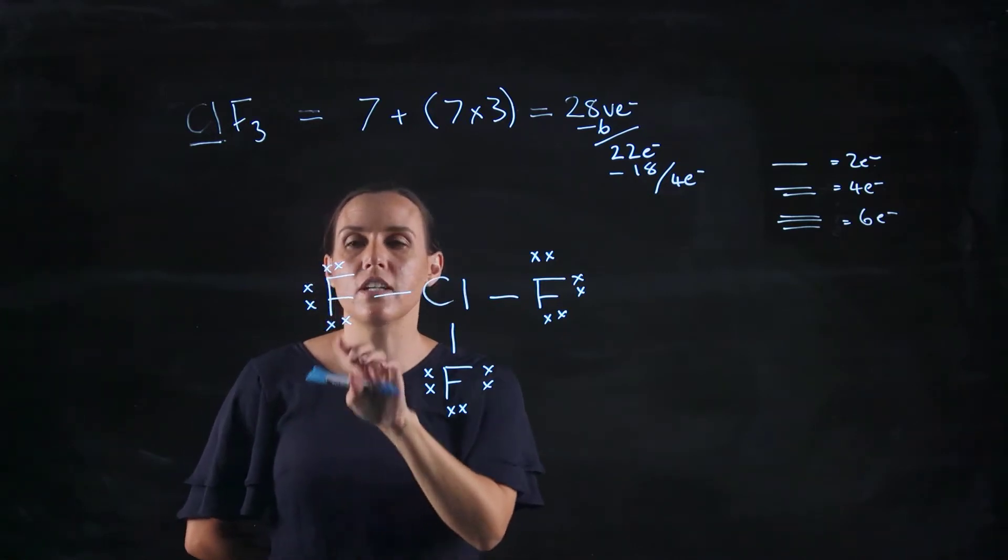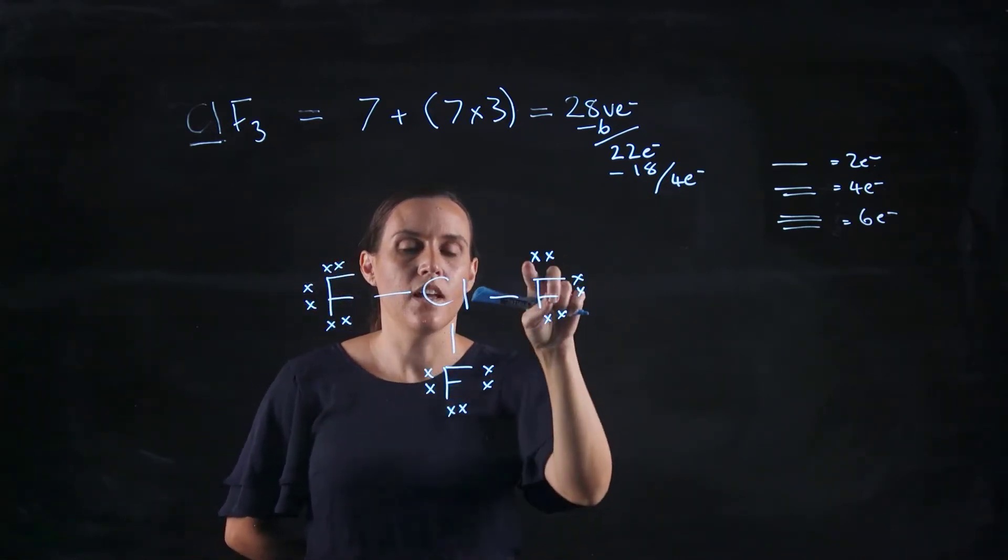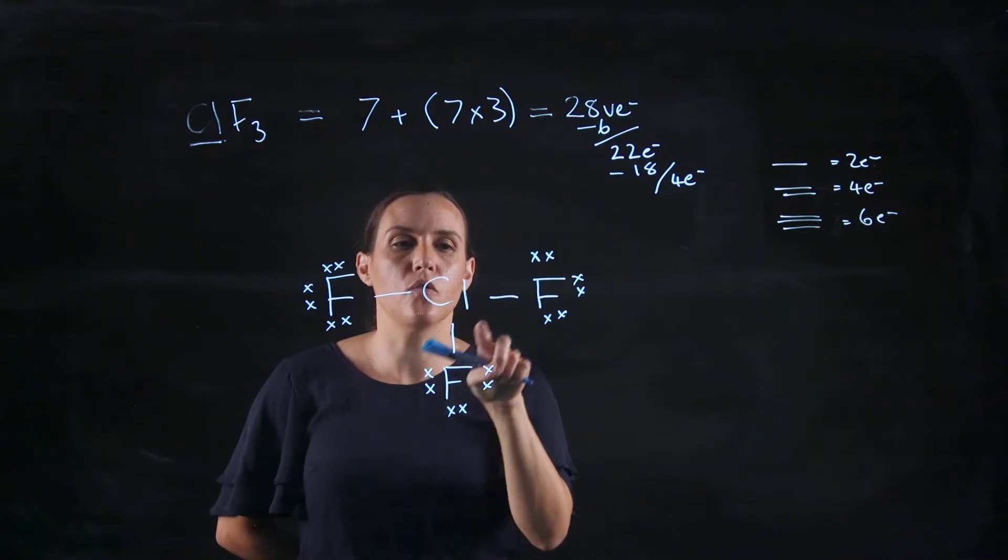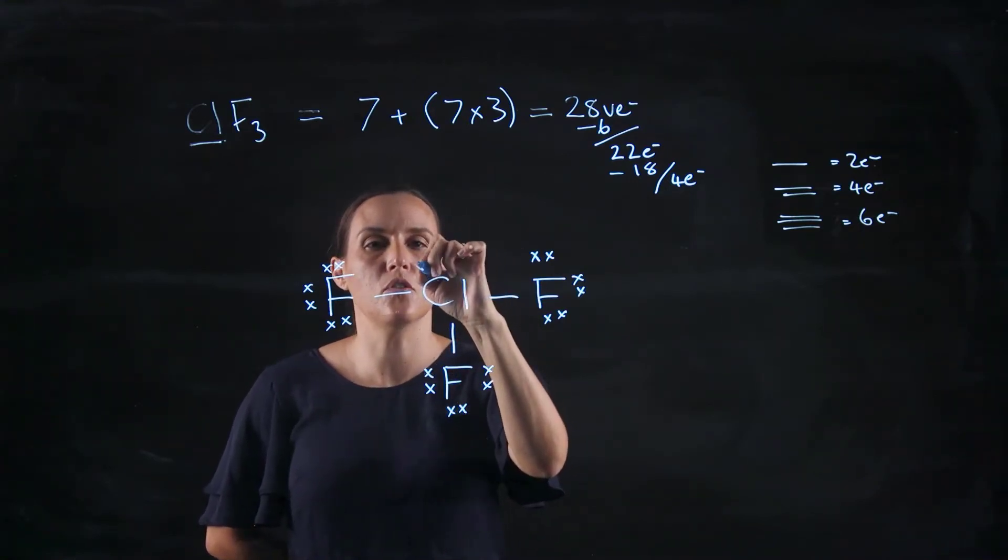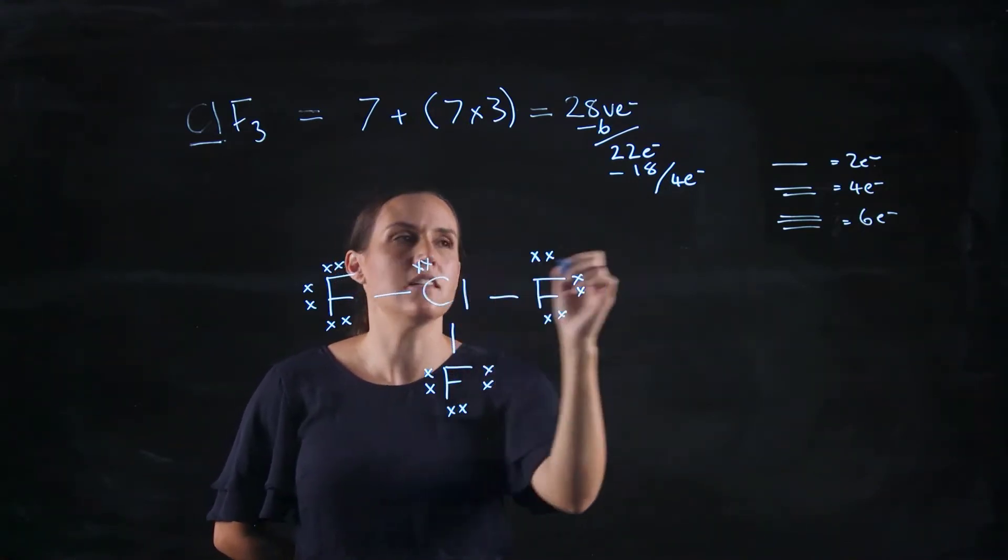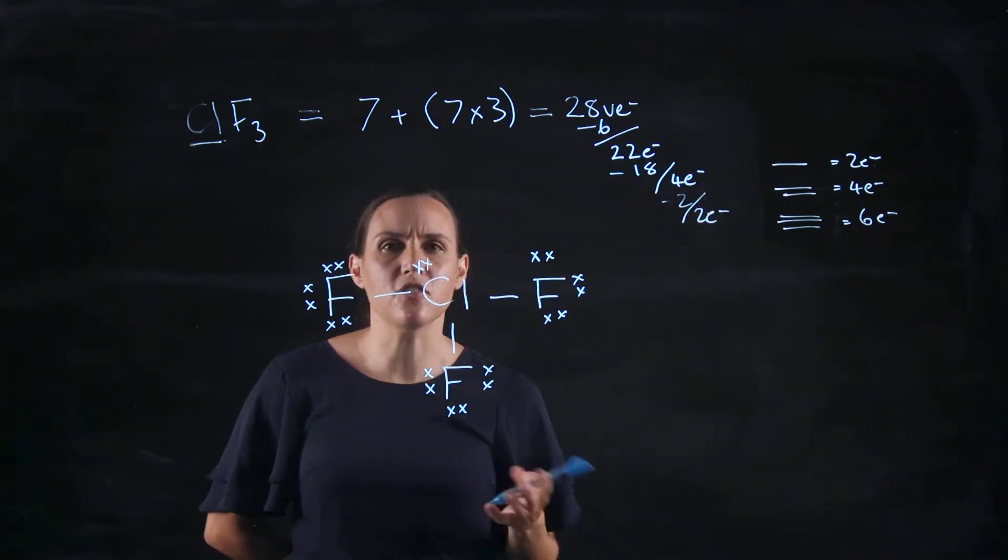So each of the fluorines have two, four, six, eight, and they're all the same. This central chlorine has two, four, six, so it needs two more to reach the eight. But then I've got two electrons extra.